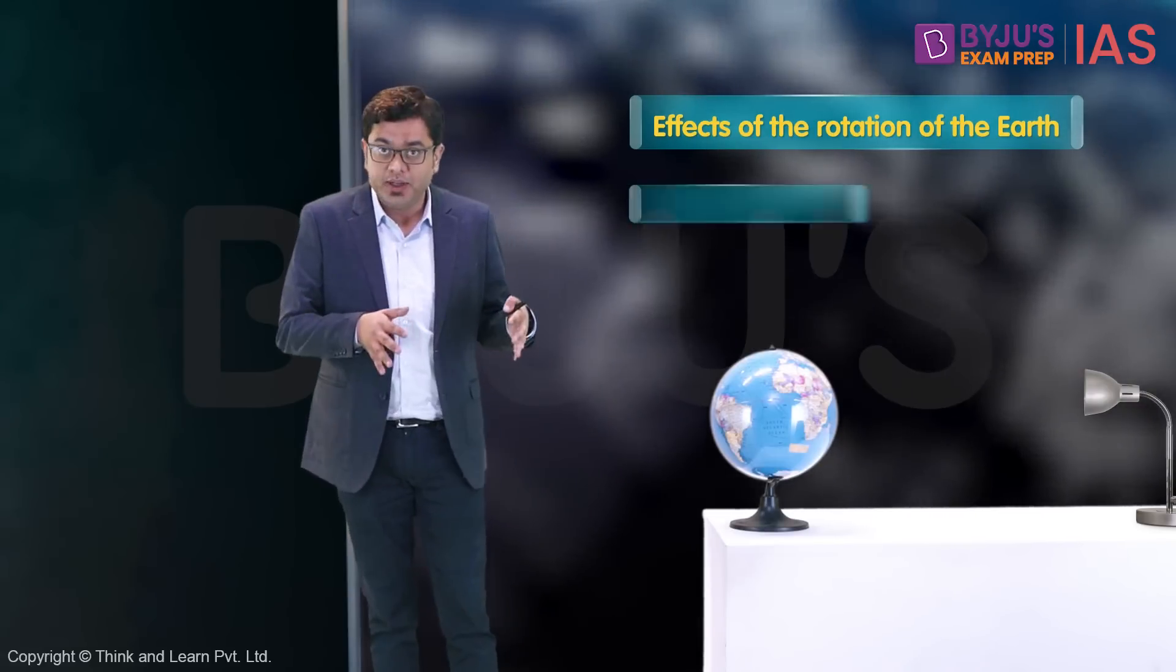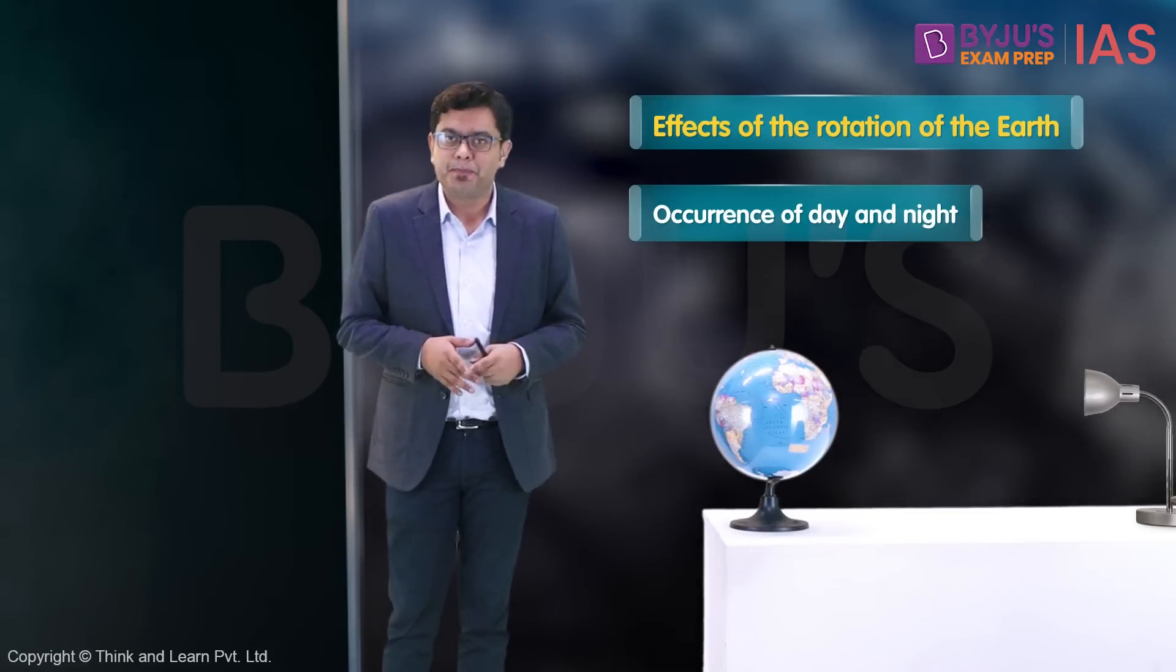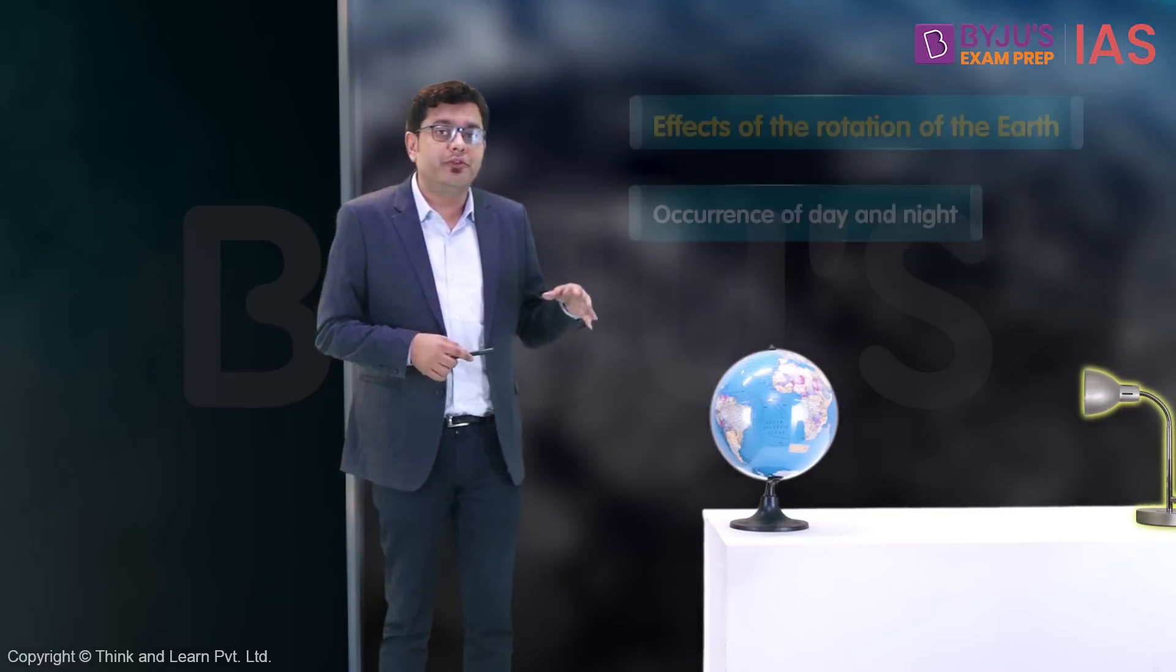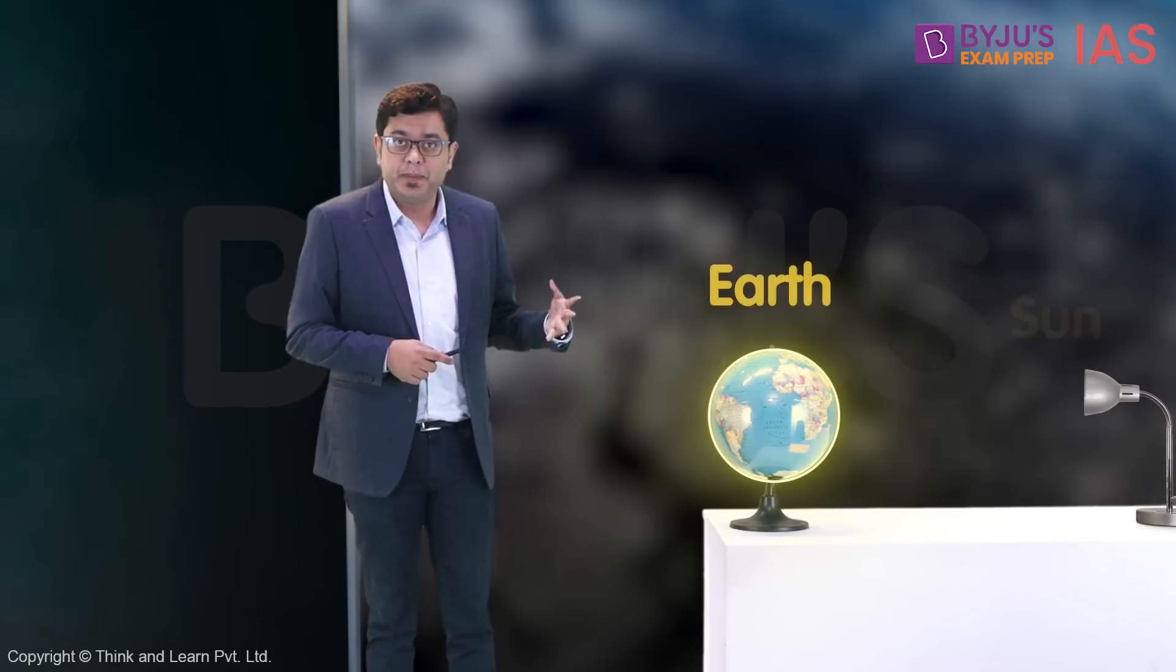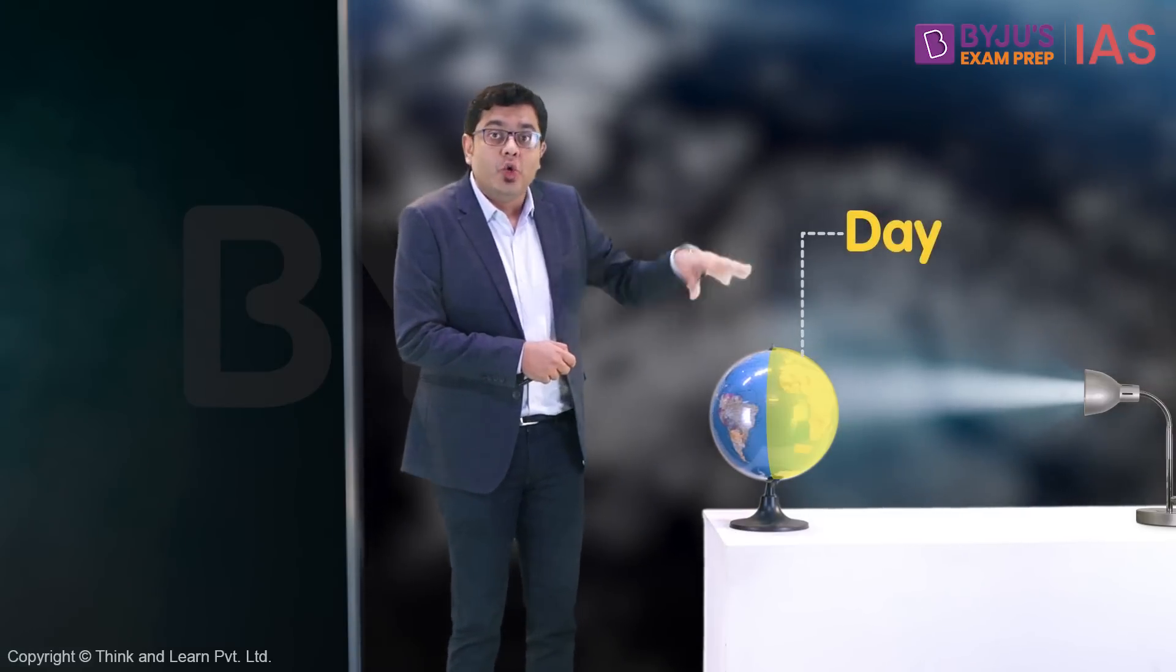When the earth rotates on its axis, it has certain effects. One of the most important effects of the rotation of the earth is the occurrence of day and night. Let's assume this source of light is the sun and this is our earth. When I switch on the light, the light shines on the earth. As you can see, this part of the globe is in sunlight. Hence, it experiences day time. While this dark part experiences night time. But this arrangement changes as the earth rotates. Hence, the day changes into the night and vice versa.